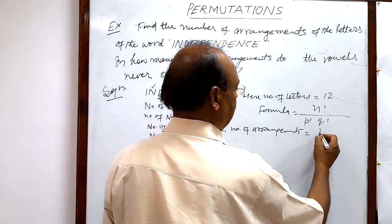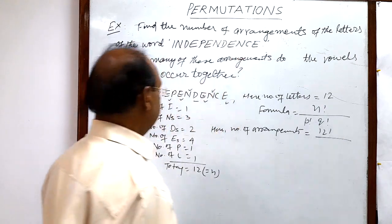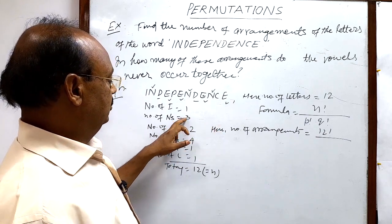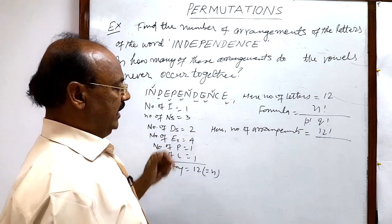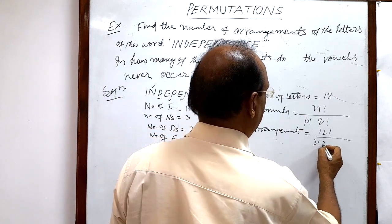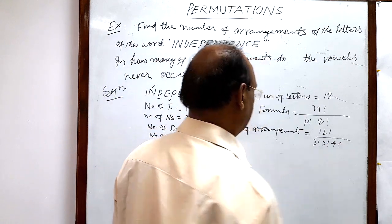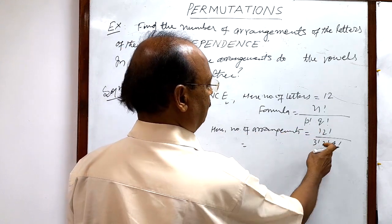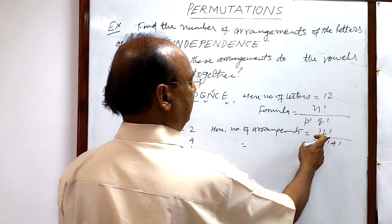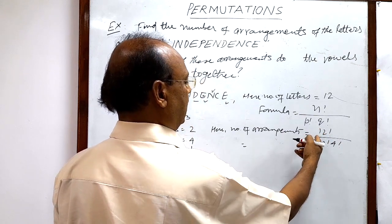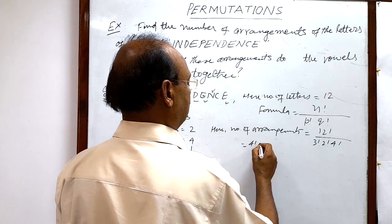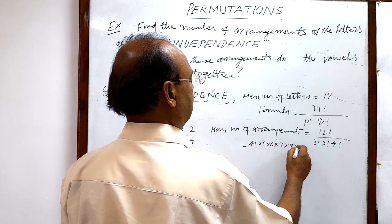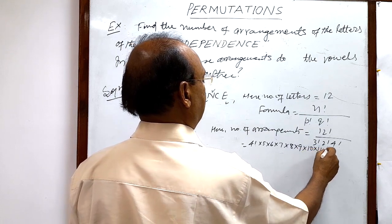There is no condition for Part 1 — simply find the total arrangements. Total number of letters is twelve, so we write twelve factorial divided by the factorials of the like objects. Three N's, two D's, and four E's are alike, so divide by three factorial, two factorial, and four factorial. We can expand twelve factorial as four factorial times five times six times seven times eight times nine times ten times eleven times twelve.